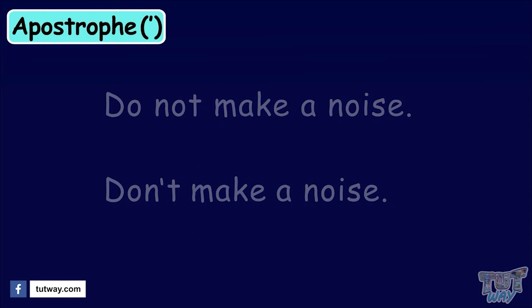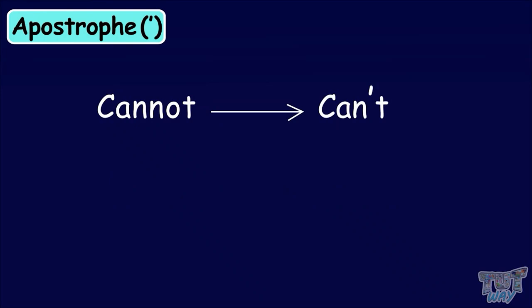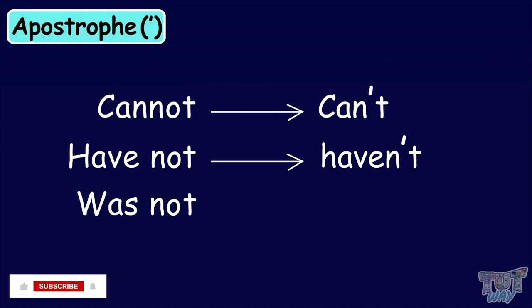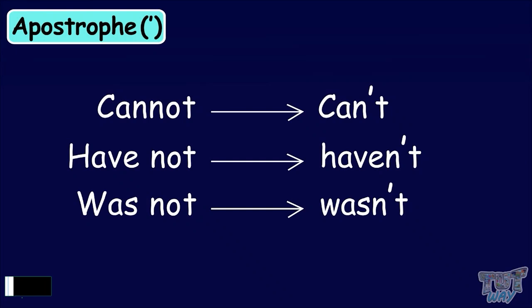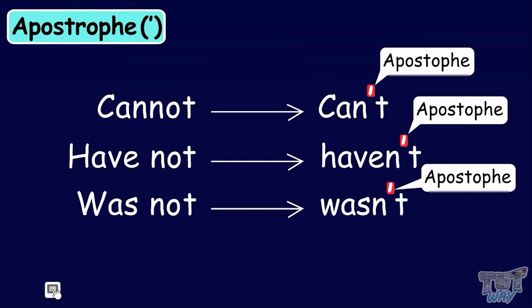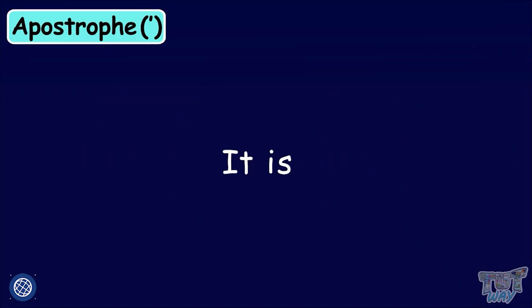Here are some more examples. Cannot will become can't. Have not will become haven't. Was not can be written as wasn't. In all these words, we have omitted the o and put apostrophes in its place. Here is another example. We can make a short form of it is by omitting the I of is. Who is can be written as whose.